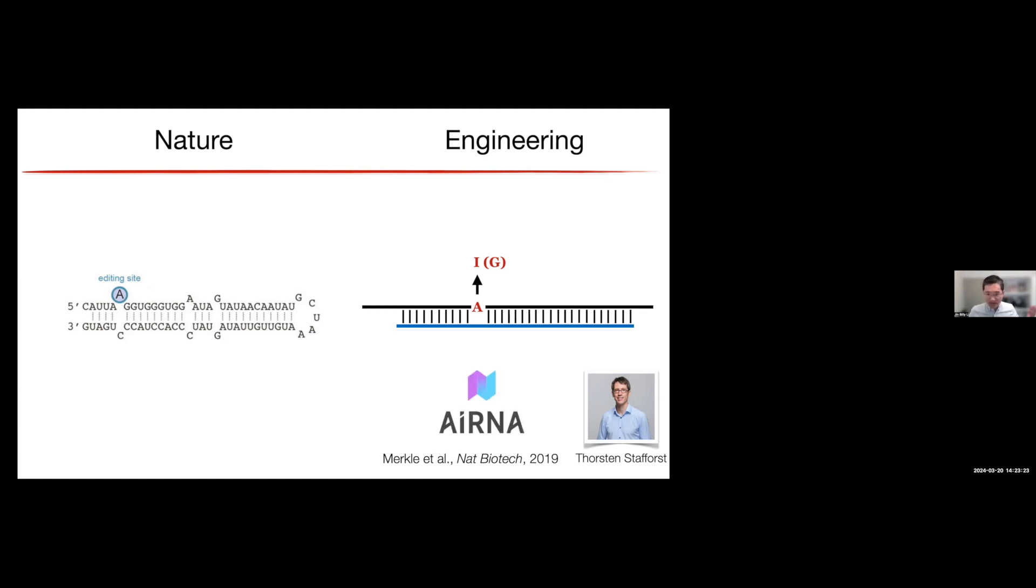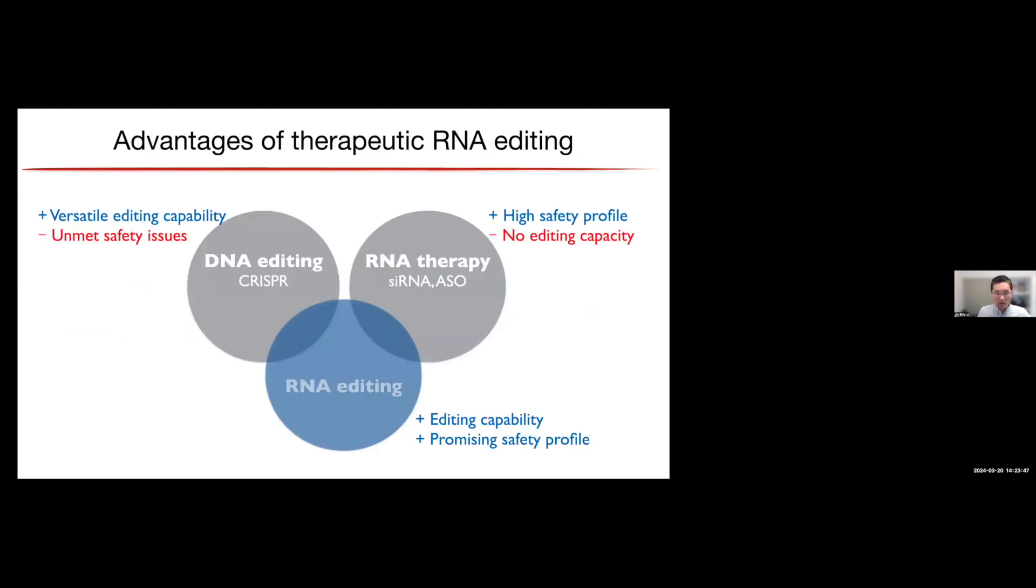Okay, so we've even co-founded a company, essentially focused on using endogenous ADAR enzyme to make specific A-to-I or A-to-G changes. We call RNA base editing at this company called Korro. That's also my disclosure contract. But the work I'm going to present to you is pretty much done only in our labs, but not in the company.